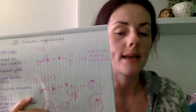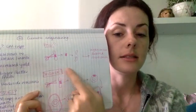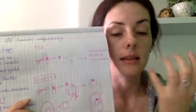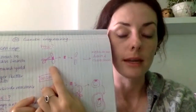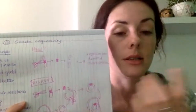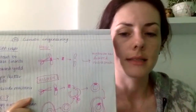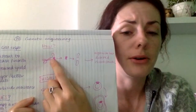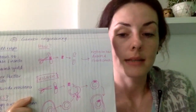Now we need to know how genetic engineering happens. At the foundation level, all you need to know is that the desired gene is cut out from the genetic material of one organism — I've drawn a chromosome to represent that — and then inserted into the genetic information of another organism, which will then have the desirable characteristic. For example, if this were a gene for blue eyes, you'd cut it out and put it into another organism, and when that organism develops, it'll have blue eyes.